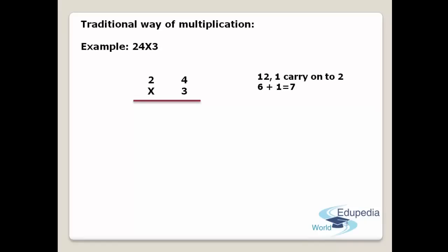12 being a two-digit number, you write the ones digit, 2, in the answer's place. Then you carry the remaining digit, 1 (which is in the tens place), to the top of the 2. After carrying the 1, you multiply 3 and 2 to get 6, add the carried 1 to get 7, and write that 7 in the answer's place. This is the traditional way of multiplication.